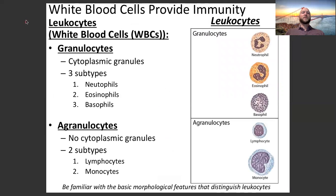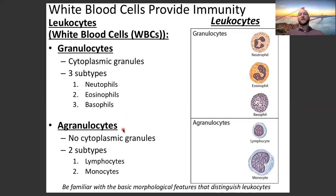White blood cells are part of our immune system and help provide immunity. We have two main categories: granulocytes and agranulocytes. Granulocytes were named for their cytoplasmic granules, and there are three subtypes: neutrophils, eosinophils, and basophils. Agranulocytes have no cytoplasmic granules — breaking down the word, 'a' means without. There are two subtypes: lymphocytes and monocytes. Be familiar with the basic morphological features that distinguish leukocytes.